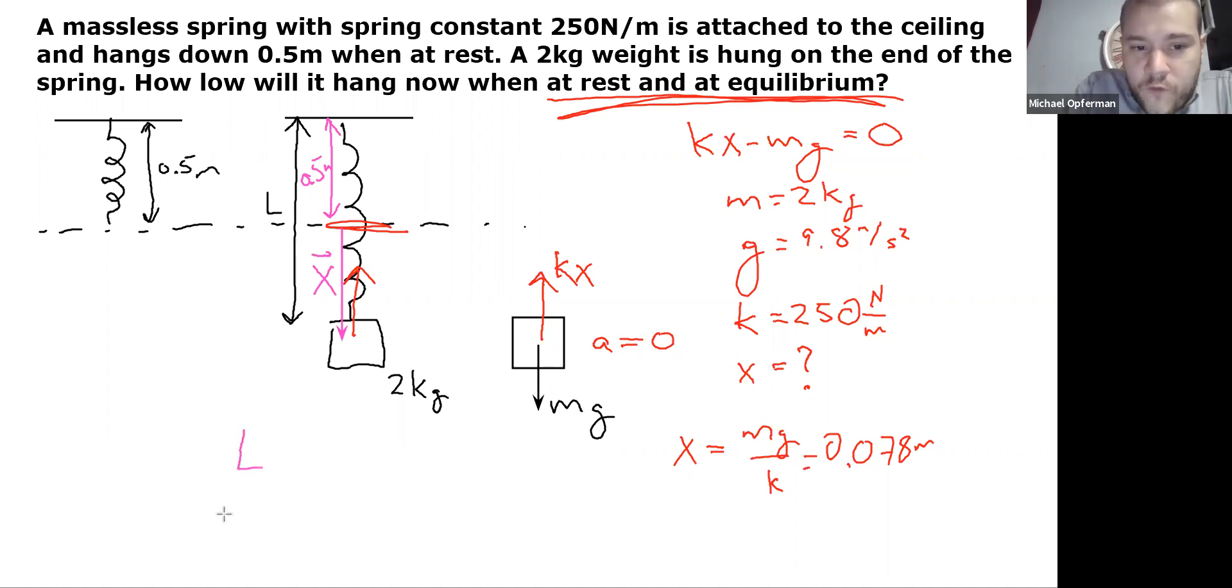So that means my overall length, which is what I'm trying to solve for, is going to be 0.5 meters plus x. So that will be 0.578 meters, 57.8 centimeters. So that's an example of a simple problem using the spring force in the F equals ma framework to calculate something.